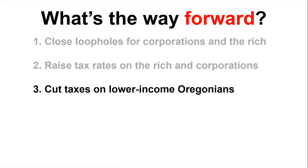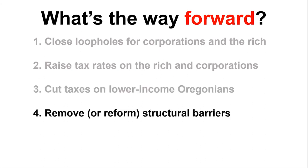The next strategy — which involves a more difficult political lift — is removing or reforming the structural barriers outlined earlier. This would mean reforming or removing the property tax limits of Measures 5 and 50 and making them more equitable. With respect to the supermajority requirement, the equitable thing to do is to get rid of it altogether and let democracy once again rule in tax policy. With respect to the kicker, short of getting rid of it, there are equitable ways to reform this policy, and we're happy to share our thoughts on that during Q&A.